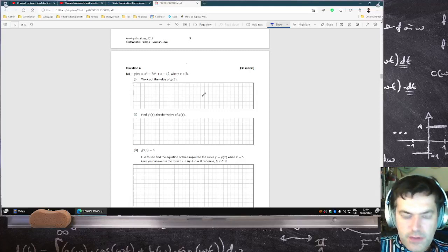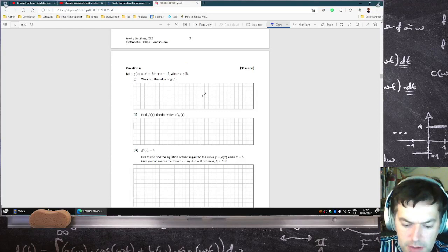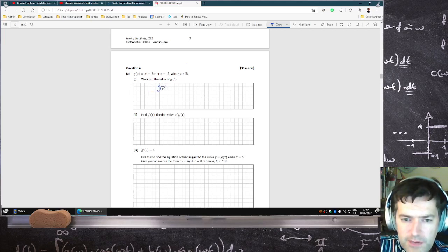Okay, let's have a look at question four. Work out g(5), so that's 5 cubed minus 7 times 5 squared plus 5 minus 12. So hopefully if I type that in correctly, minus 57.